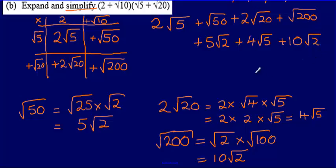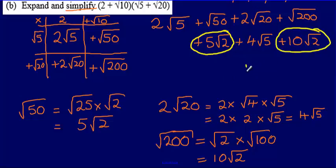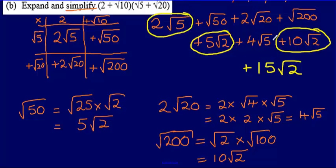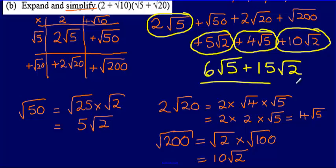The final thing to do is tidy this up. I have 5 root 2 and 10 root 2, which adds to give 15 root 2. And I have 2 root 5 plus 4 root 5, which gives 6 root 5. So the final answer is 6 root 5 plus 15 root 2.